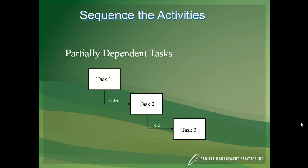But in the lag field, we can type in minus 50% or minus 5 days or half the duration. If you put positive values, then you'll create a gap between the tasks. So wait 5 days before you start task 3, for example.